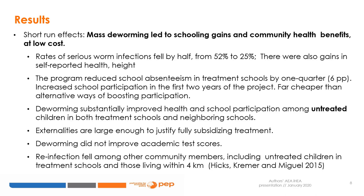The results from the original 2004 study indicate that short-run mass deworming led to schooling gains and community health benefits at low cost, with serious infections falling by half from 52 to 25%, reducing absenteeism and improving the health of untreated children who benefited from having fewer infected peers around them.